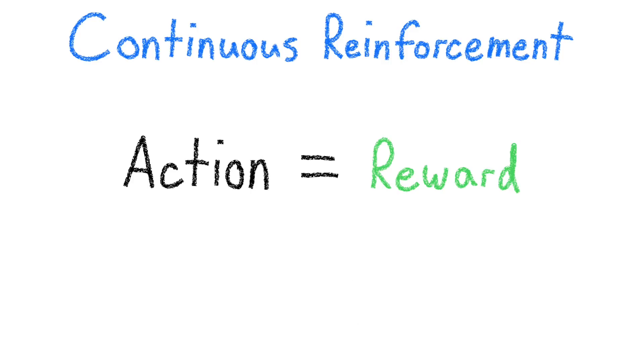The example I just described is known as continuous reinforcement, when every time an action is performed, there is a reward. This reinforcement schedule is great for teaching the relationship between an action and an outcome, but has a risk of becoming extinct if those two things stop connecting.